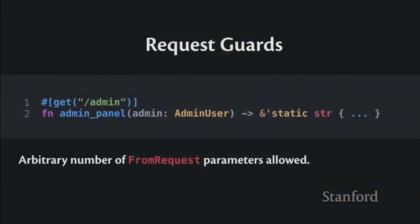Where it gets much more interesting is with arbitrary input validation, and Rocket's mechanism for this is called request guards. Request guards are parameters in your route that don't have a matching parameter in the attribute. For example, 'get /admin' with an 'admin' parameter in the function — since 'admin' is not in brackets, it's not a dynamic path parameter, it's a request guard. Types used as request guards must implement a different trait called 'FromRequest', which can do whatever it wants. Rocket runs these automatically and only executes your handler if these validations hold true.